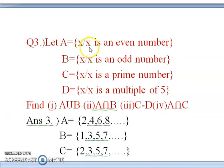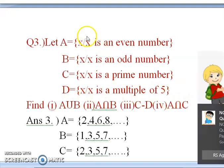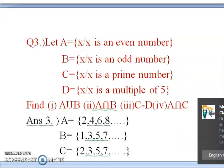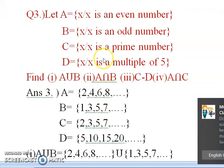The next question: let A = {x : x is an even number}, B = {x : x is an odd number}, C = {x : x is a prime number}, and D = {x : x is a multiple of 5}. We are asked to find: A union B, A intersection B, C minus D, and A intersection C. This is an important four-mark question.